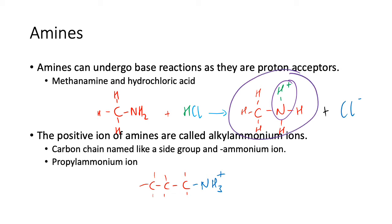So what would this one be? That would be methyl ammonium ion. So it's just this: carbon chain name like a side group, so that's the methyl part and then the ammonium ion - methyl ammonium ion or propyl ammonium ion.